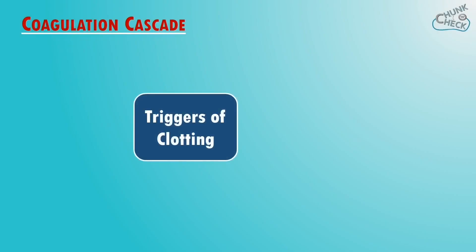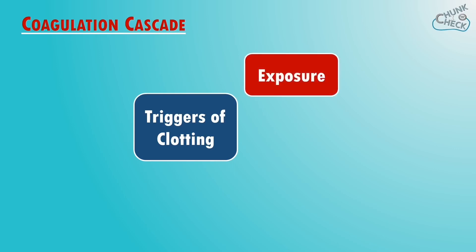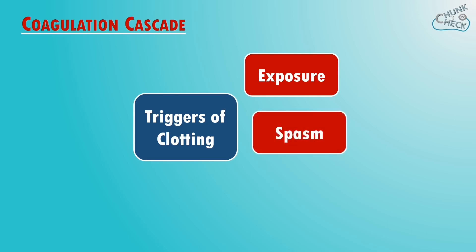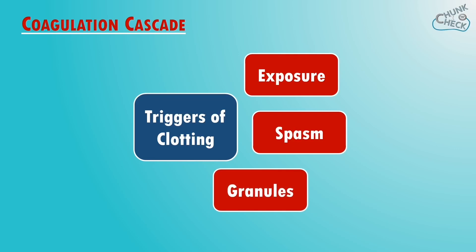Clotting is triggered by three main factors: exposed basement collagen when your vessel is damaged, smooth muscle spasm as the vessel constricts to try to stop the bleeding, and by platelets releasing granules, which we'll talk about in a moment.